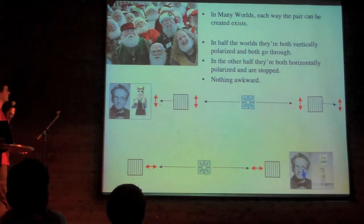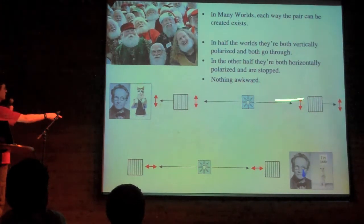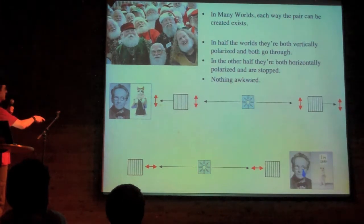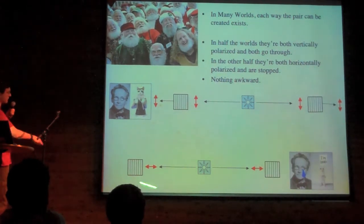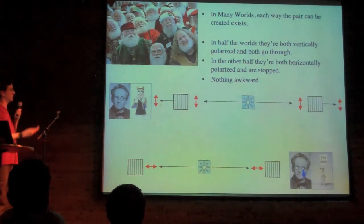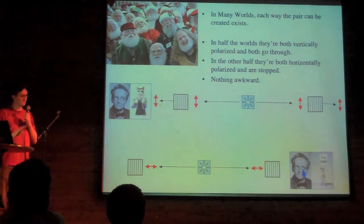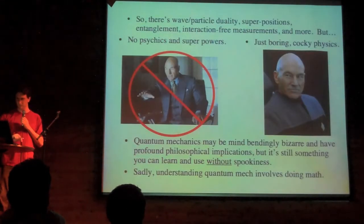In the many worlds hypothesis, which is vastly superior in every possible way, there's a world where it's vertically polarized, and the cat's alive. And there's no weird questions, and there's no weird transfer, and then there's another universe where it's horizontally polarized, and there's no problem there either. So basically, many worlds, yay, Copenhagen, boo.